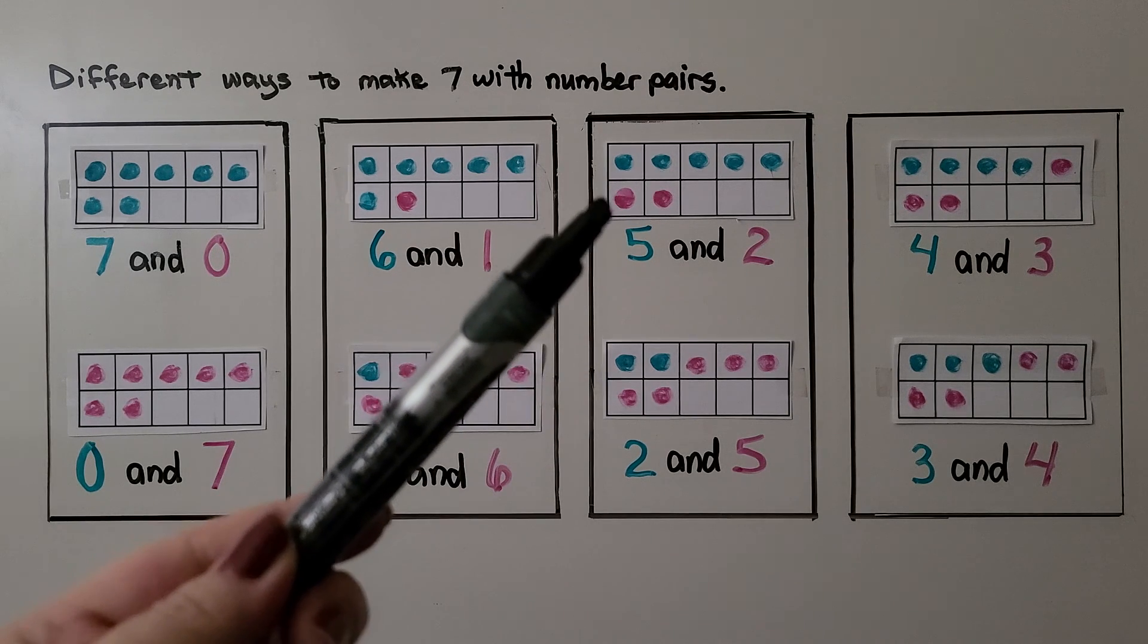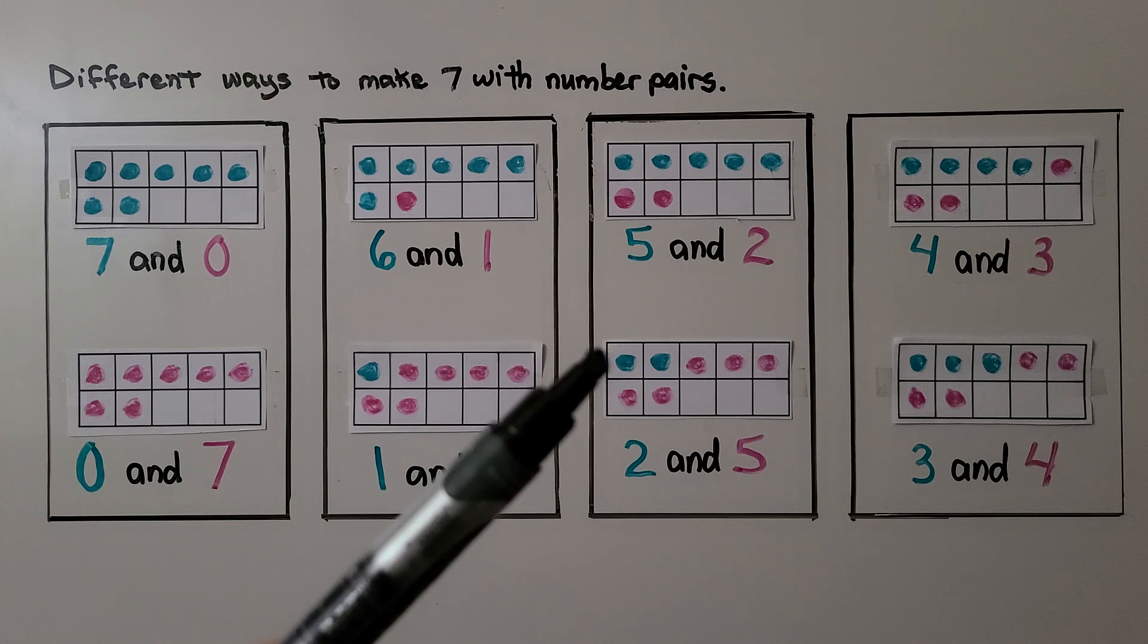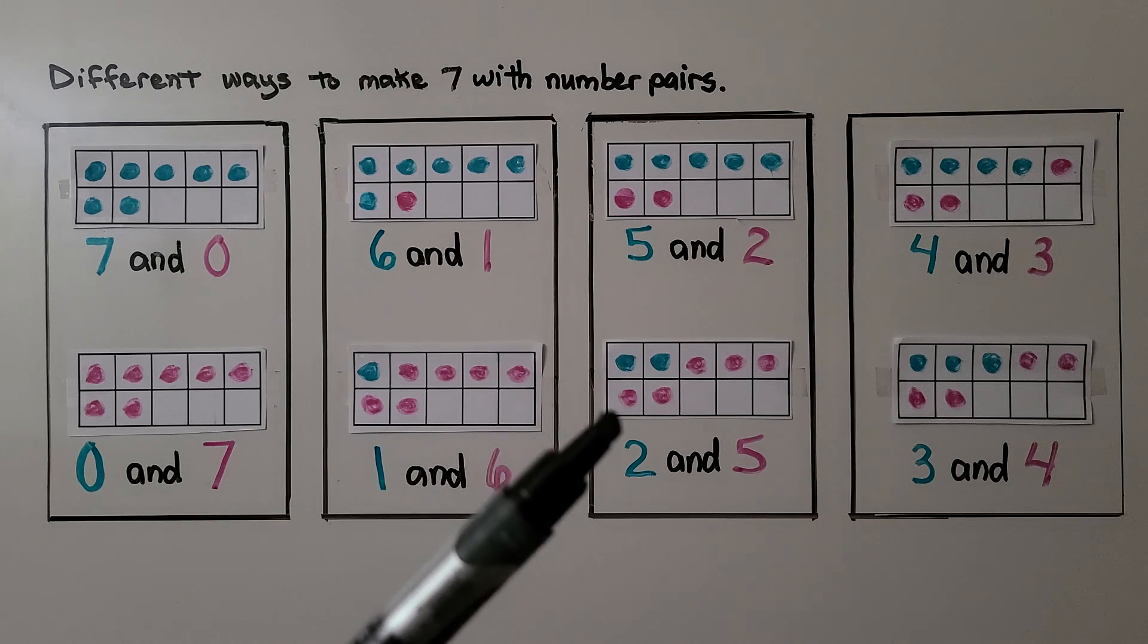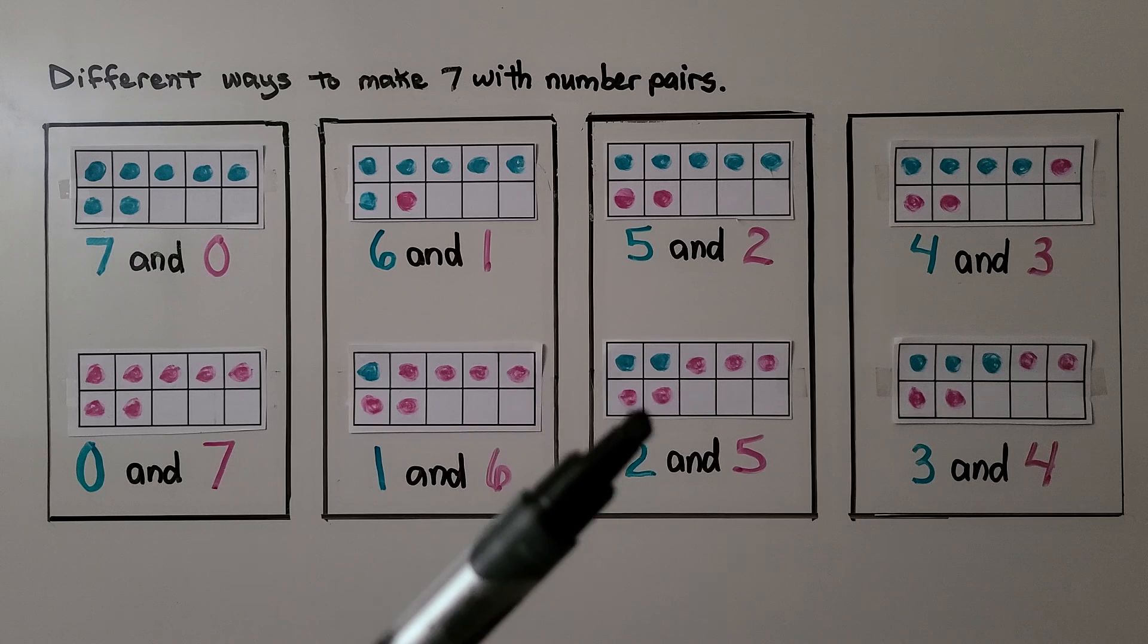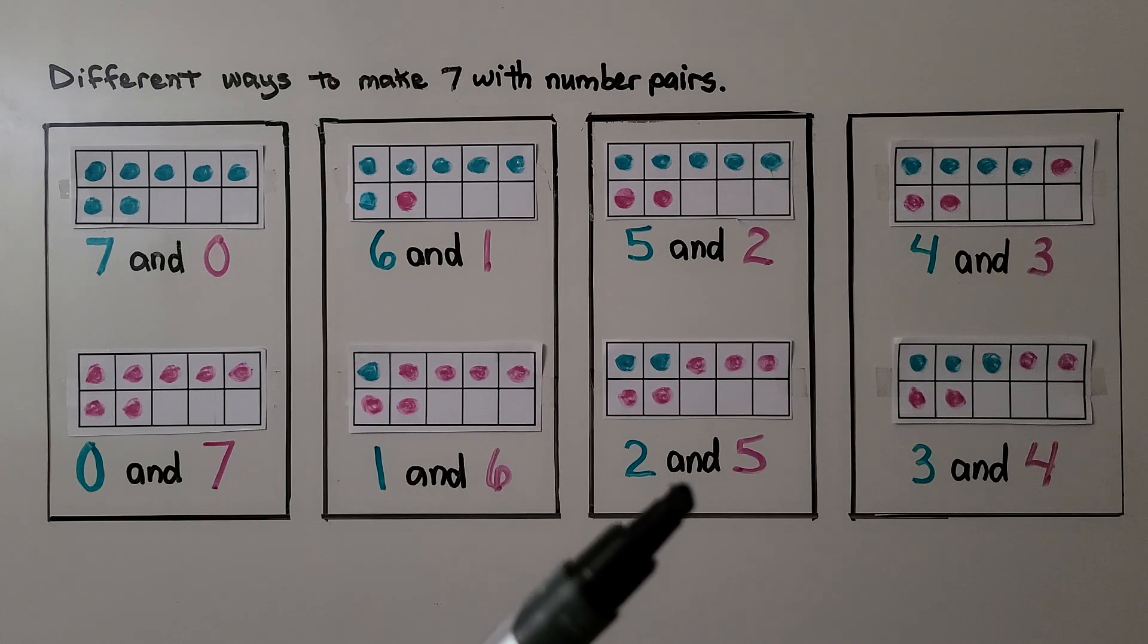We could do 5 blue ones and 2 pink ones. Or we could do 2 blue ones and 5 pink ones. 5 and 2 or 2 and 5. That makes 7.